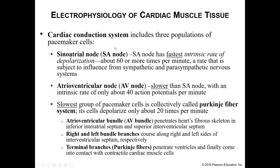We start with your SA node — this is your fastest intrinsic rate of depolarization, firing at about 60 or more action potentials per minute. Your sympathetic and parasympathetic nervous system do influence how quickly your heart beats. Your SA node fires at about 60 times a minute, and then your sympathetic or parasympathetic determines whether to increase or decrease this, depending on your current situation.